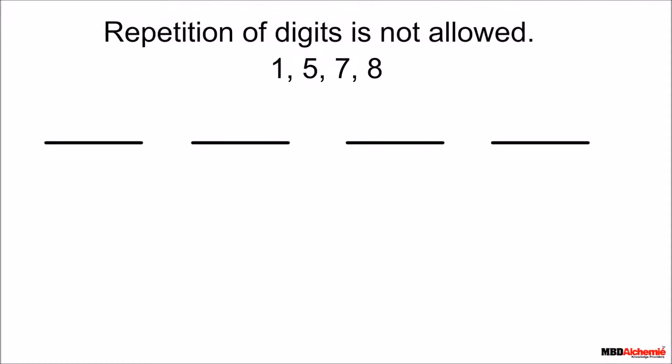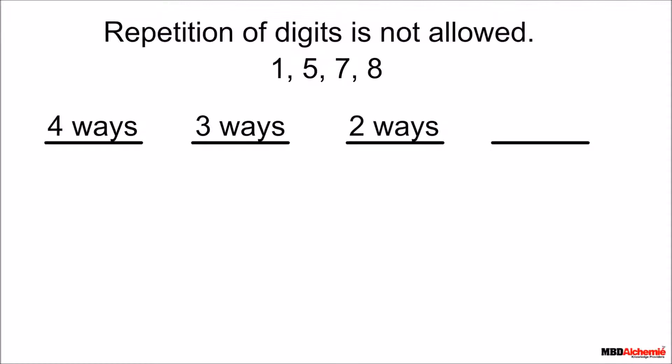The first place can be filled in four different ways by any of the numbers 1, 5, 7, and 8. Following which, the second place can be filled in by any of the remaining three numbers in three different ways. Following which, the third place can be filled in two different ways. Following which, the fourth place can be filled in one way.